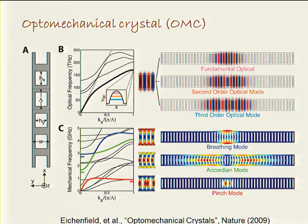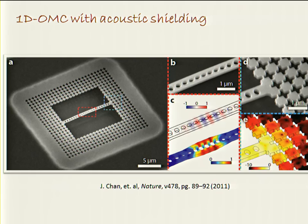One can similarly consider the acoustic band structure of waves traveling down this nanobeam. The same wavelength of acoustic wave is Bragg scattered strongly, but since the speed of sound in silicon is about five orders of magnitude smaller than light, the relevant frequencies are two gigahertz instead of 200 terahertz. Certain acoustic bands — those with the right symmetry to couple via radiation pressure to the optical waves, similar to Raman-active modes — can be localized in the center by chirping the lattice. The most strongly coupled mode is the breathing mode.